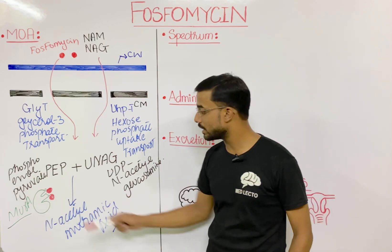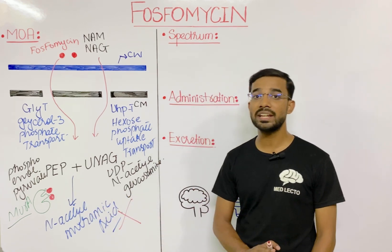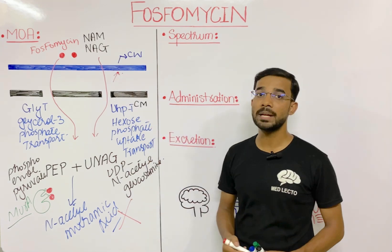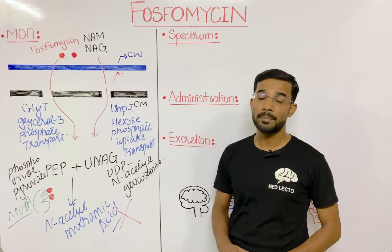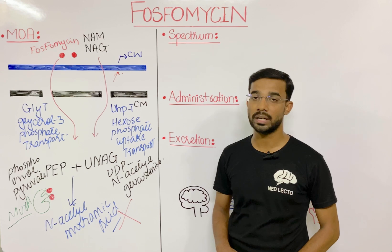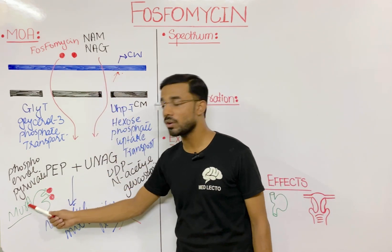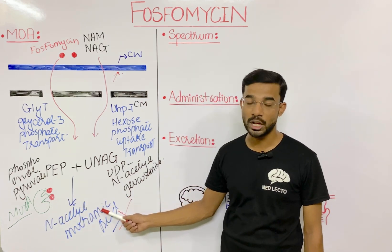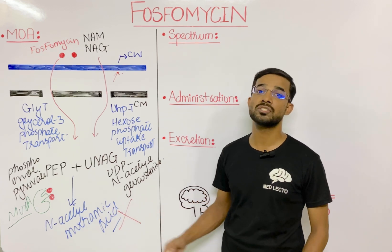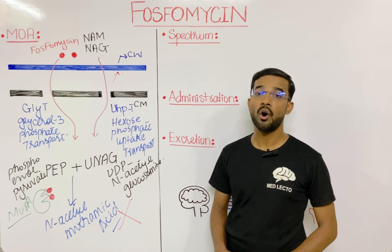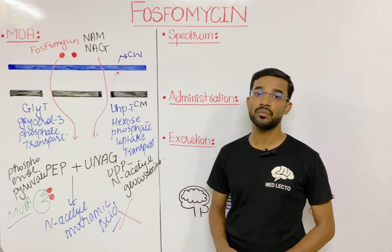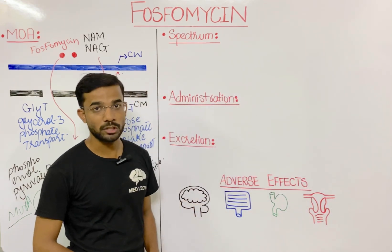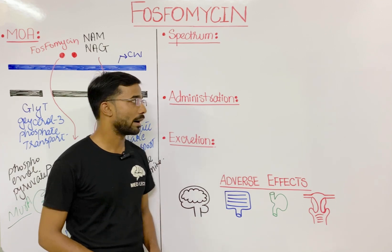When MurA is inhibited, there is no formation of N-acetyl muramic acid. Without N-acetyl muramic acid there is a disturbance in the synthesis of the peptidoglycan in the cell wall. Fosfomycin inhibits the MurA enzyme, inhibits the synthesis of N-acetyl muramic acid, which leads to no peptidoglycan synthesis, no cell wall, and ultimately lysis of the bacterial cell. This is why fosfomycin is a bactericidal antibiotic.